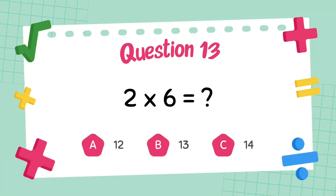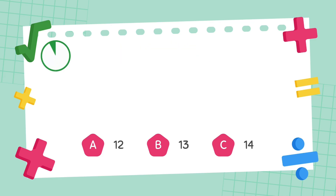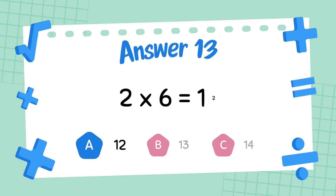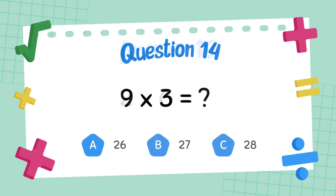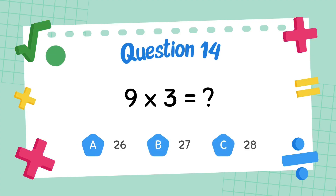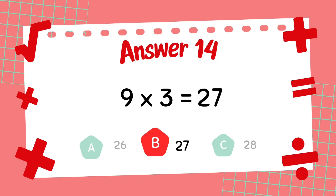What is two multiply six? The answer is twelve. What is nine multiply three? The answer is twenty-seven.